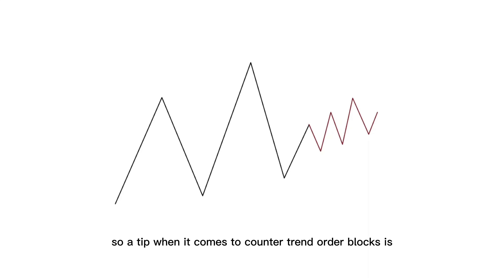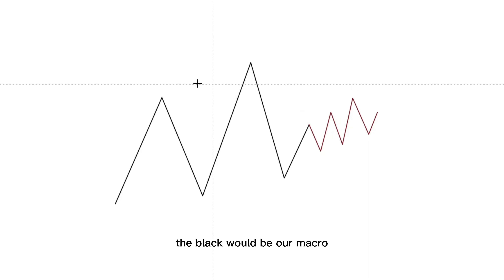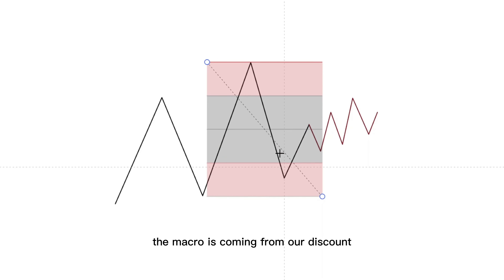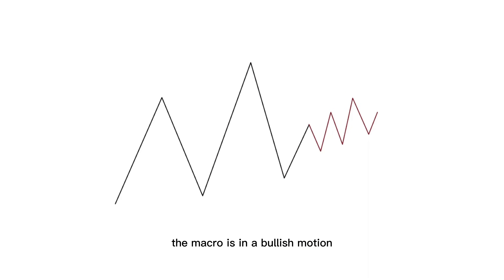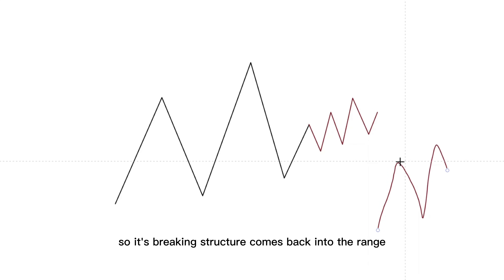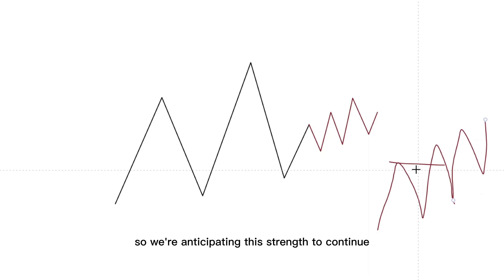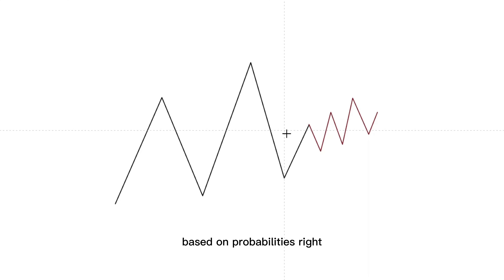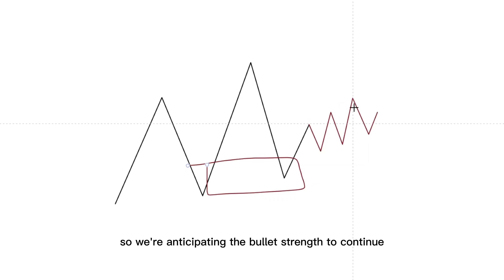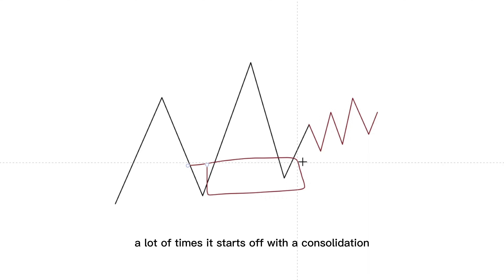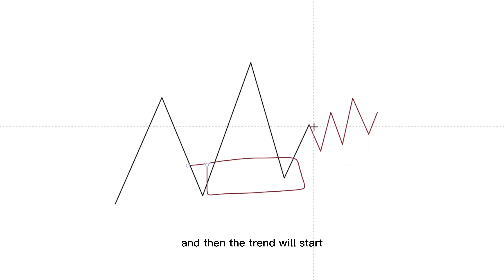A tip when it comes to counter trend order blocks is you want to make sure you're looking at the macro. The black line would be our macro, and look at where the macro is coming from — it's coming from our discount. So initially the macro is in a bullish motion: it's breaking structure, comes back into the range, comes back to a significant level, and expands again. So we're anticipating this trend to continue based on probabilities. Price already reacted from a discounted level right here, so we're anticipating the bullish trend to continue. When you go on the micro, you're seeing higher highs being made. A lot of times it starts off with a consolidation, a fake out to the bottom side, and then the trend will start.